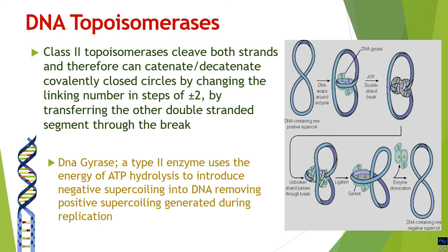Type II topoisomerase cleaves both strands at once, decatenating and catenating covalently closed circles by changing the linking number in steps of plus or minus two. In eukaryotes, this function is performed by DNA gyrase, which is a type II enzyme dependent on ATP. It can also introduce negative supercoiling into the DNA, functioning in both directions to decatenate or catenate and to increase or decrease supercoiling. In prokaryotes, topoisomerases play a role during termination of replication to decatenate the two newly synthesized daughter DNA molecules.